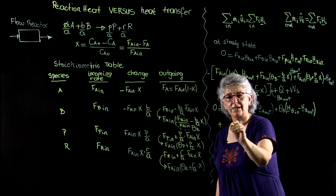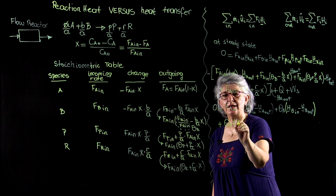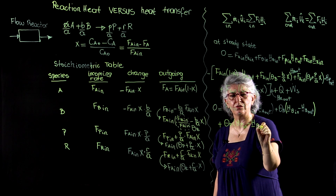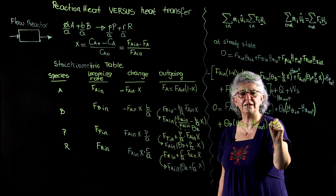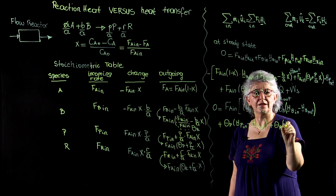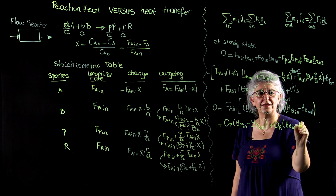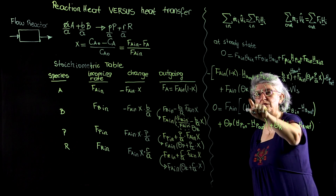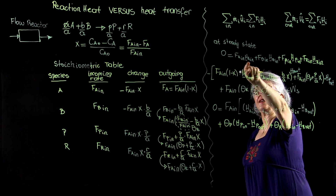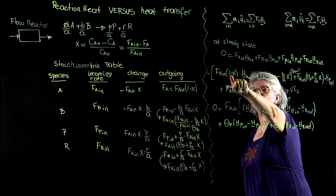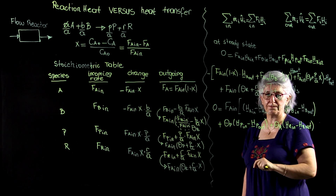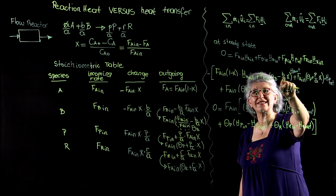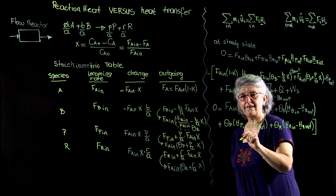Plus theta_P times (HP_in minus HP_out), plus theta_R times HR_out. So this has taken care of all the first terms: FA_in, and the terms with theta_B, theta_P, and theta_R. Now I have to take care of the second terms — the terms that have X.